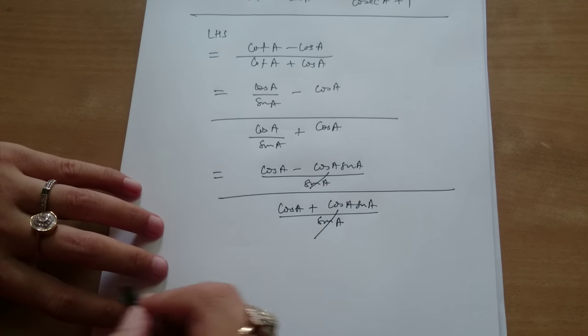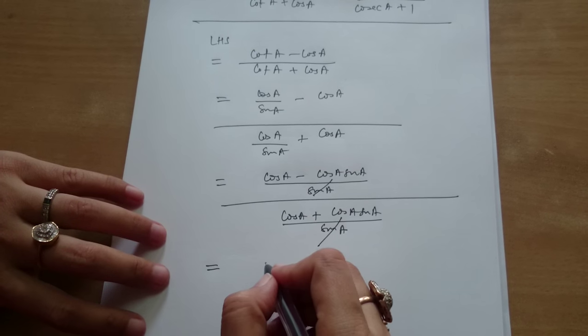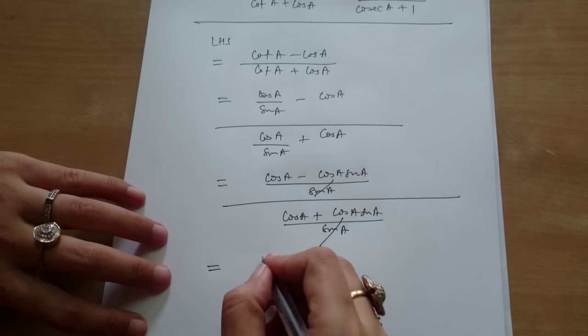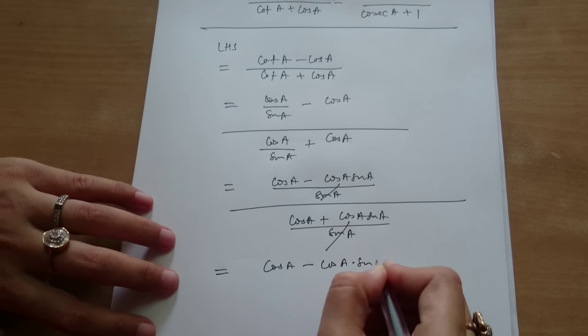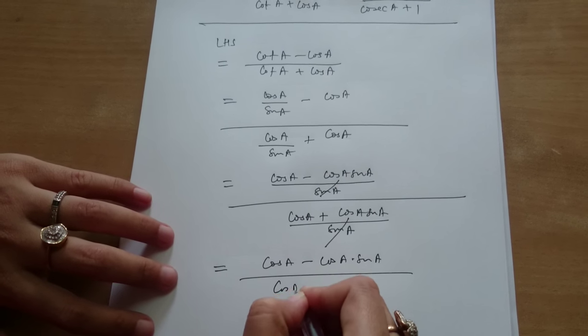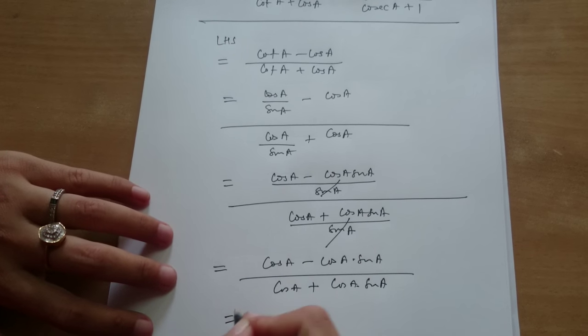Can we cancel this? Okay. So what will be left side? This is cos A minus cos A into sine A upon cos A plus cos A into sine A. This is equal to...